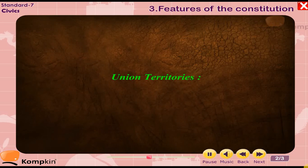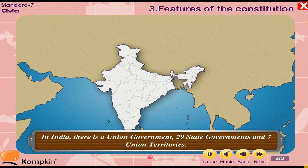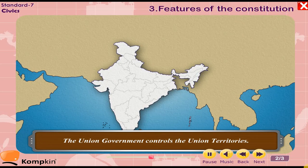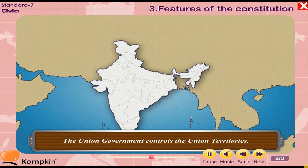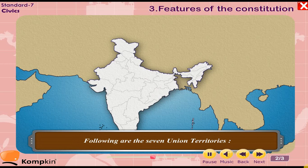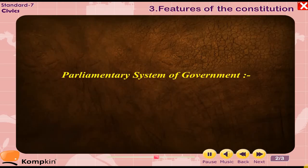Union territories: In India, there is a union government, 29 state governments and 7 union territories. The union government controls the union territories. The seven union territories are: New Delhi, Daman and Diu, Pondicherry, Chandigarh, Dadra and Nagar Haveli, Andaman and Nicobar Islands, and Lakshadweep.